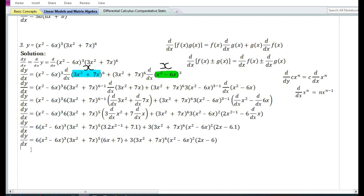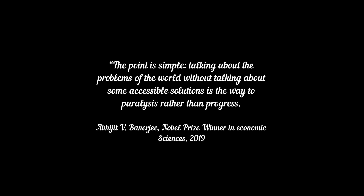The final answer is dy by dx, that is the derivative of y with respect to x, is equal to: x squared minus 6x to the power 3 times 3x squared plus 7x to the power 5 times 6x plus 7, plus 3 times 3x squared plus 7x to the power 6 times x squared minus 6x to the power 2 times 2x minus 6.